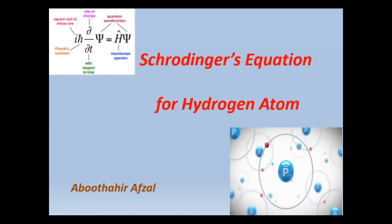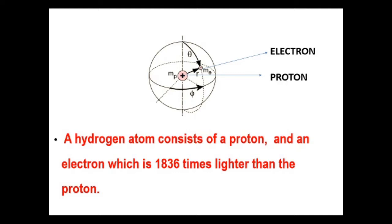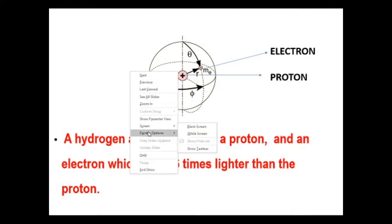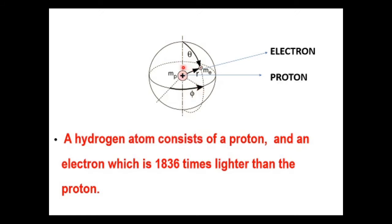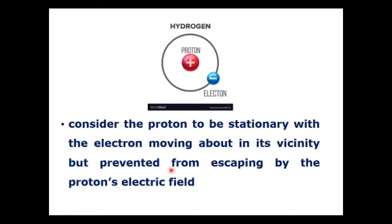A hydrogen atom consists of a proton and an electron only. The proton is situated at the center and the electron is moving around the stationary proton. The electron is very much lighter, around 1836 times lighter than the proton. The electrostatic force of attraction between the proton and electron keeps the electron from escaping the vicinity of the proton.